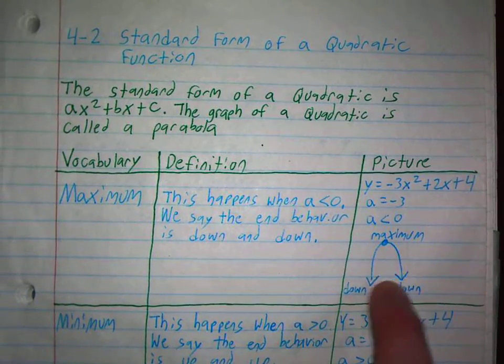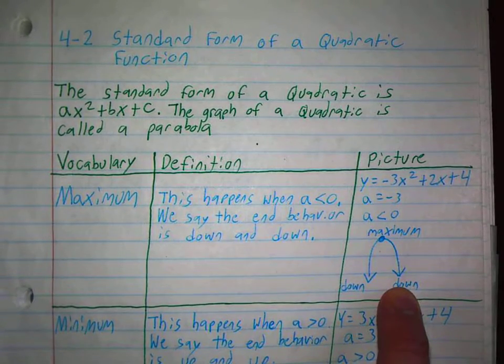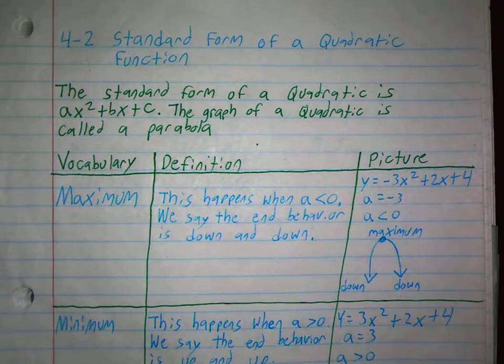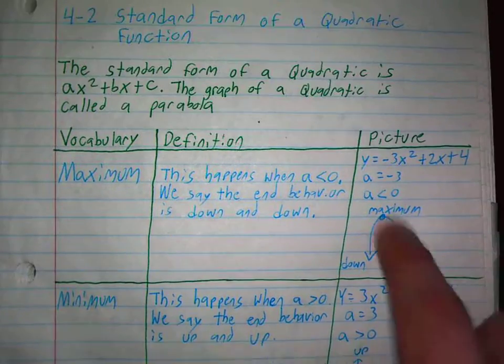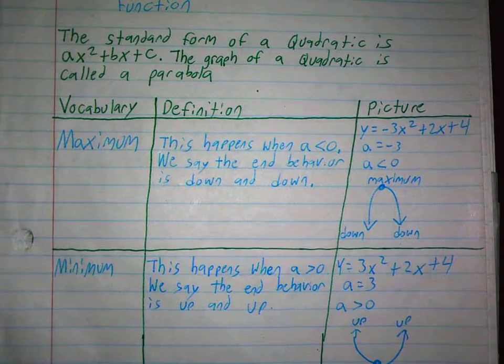Because it's negative, a being the first term coefficient, when a is less than 0, or negative, same thing, we say it opens down and down. So negative 3x squared opens down and down because it looks like this.